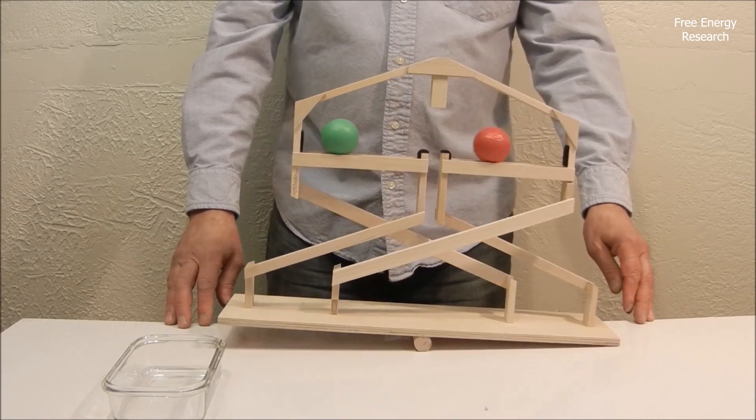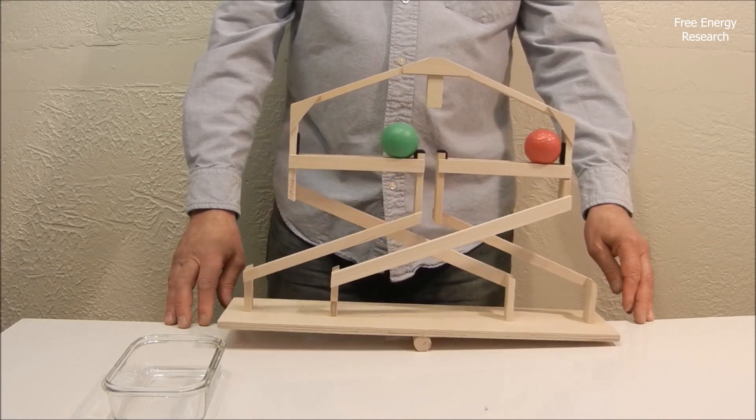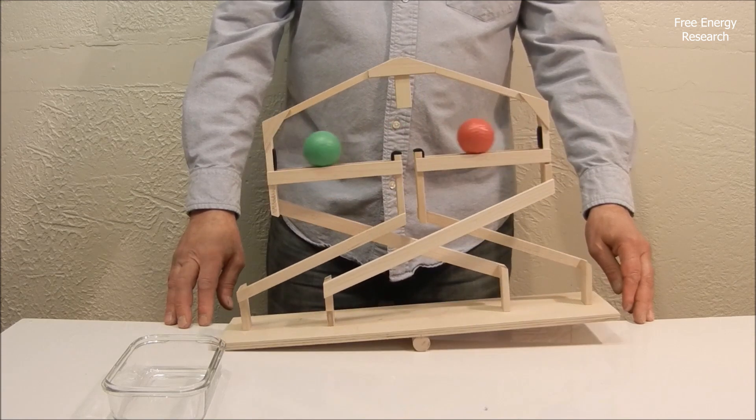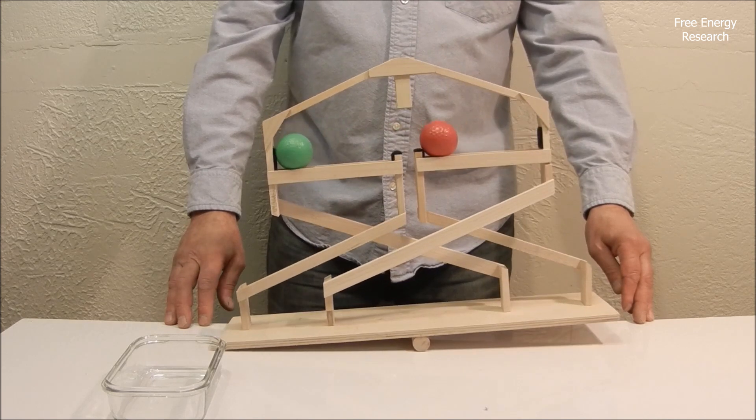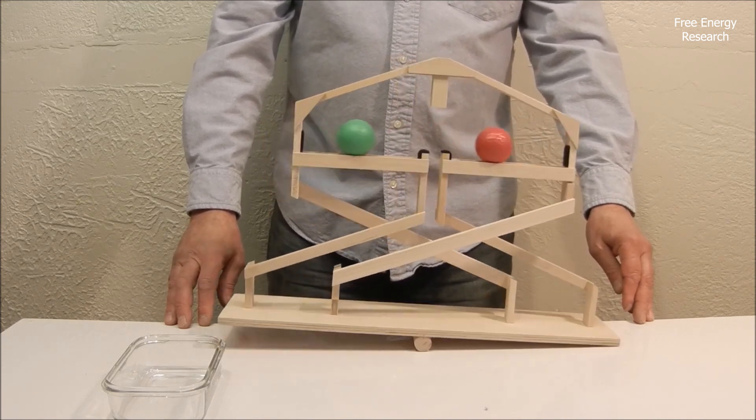The weight of the ball reaching the end triggers the CISO to tilt in the opposite direction, releasing the second ball. This process repeats, with each ball resetting the system as it travels back and forth between the tracks.